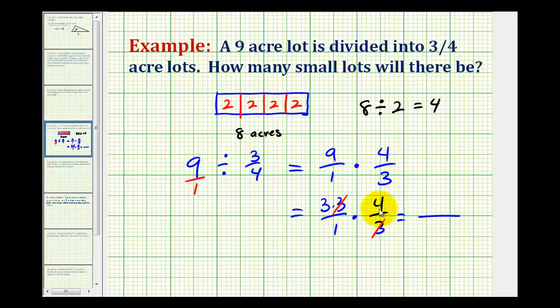Now we can multiply across the numerator. We have three times four, that's twelve. Our denominator is just one. So we have twelve over one or just twelve, which tells us that we have twelve smaller lots. So there are twelve three fourths in nine.